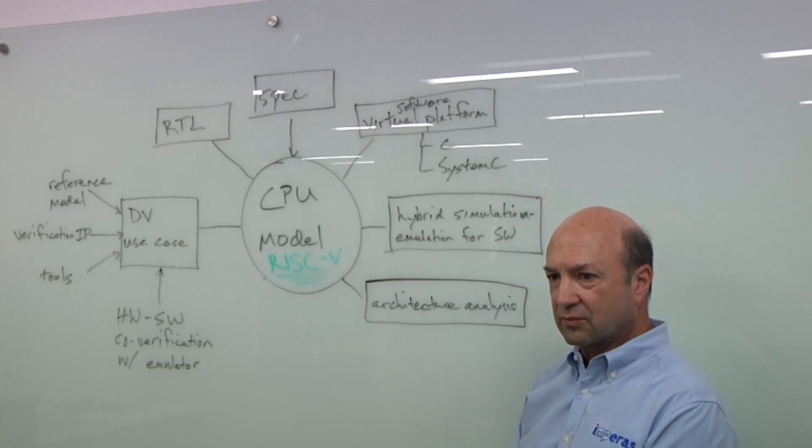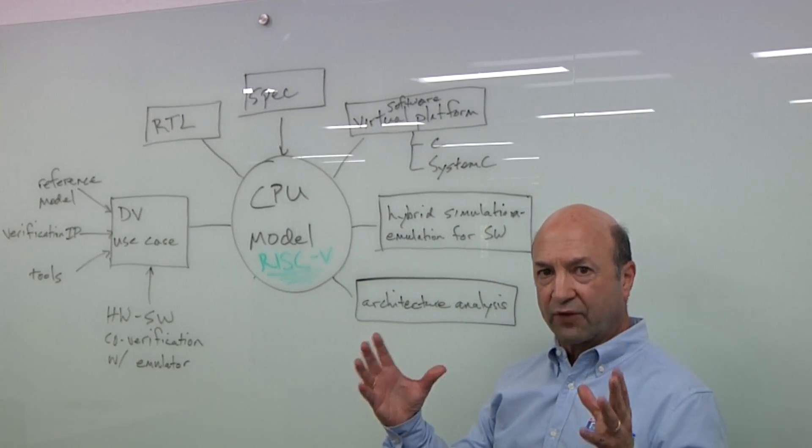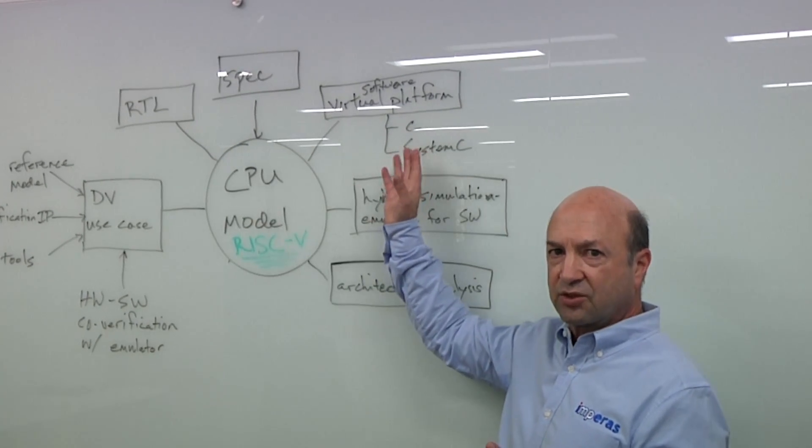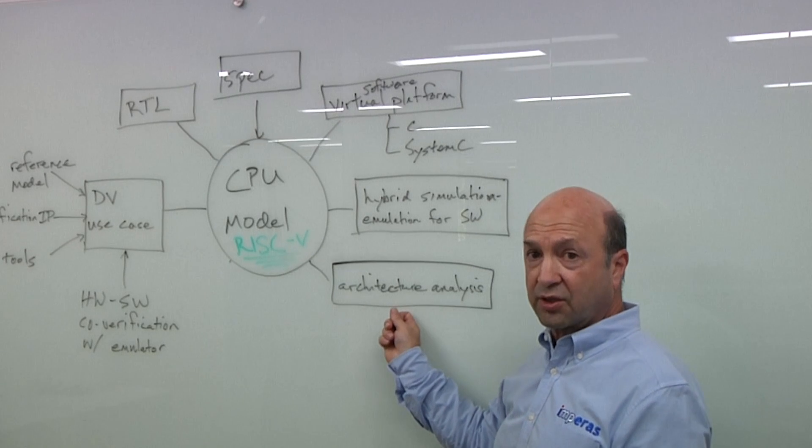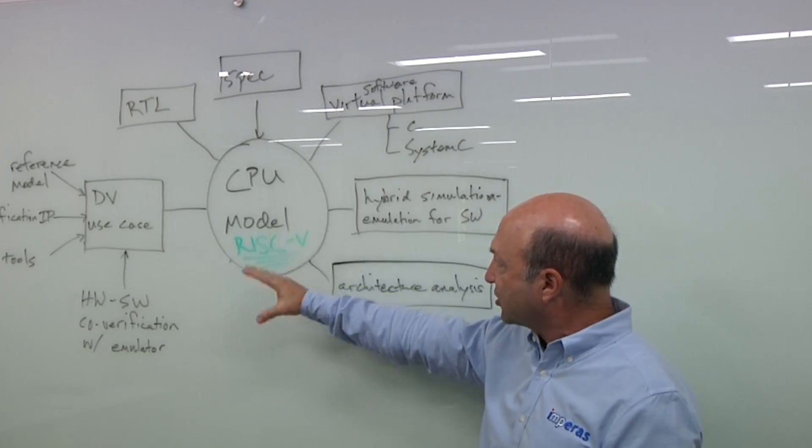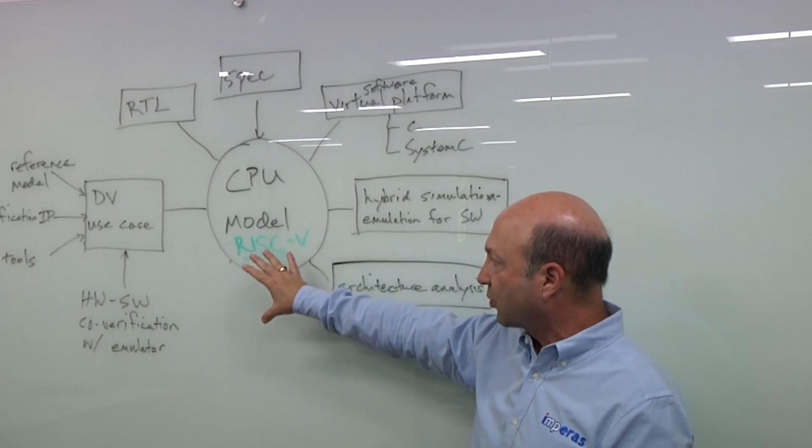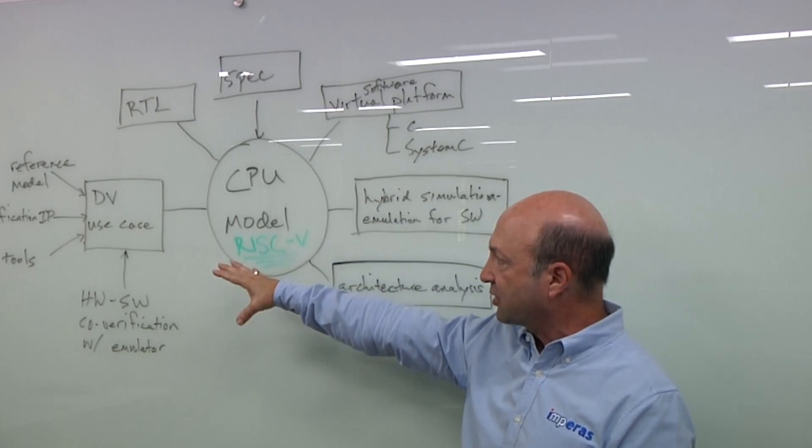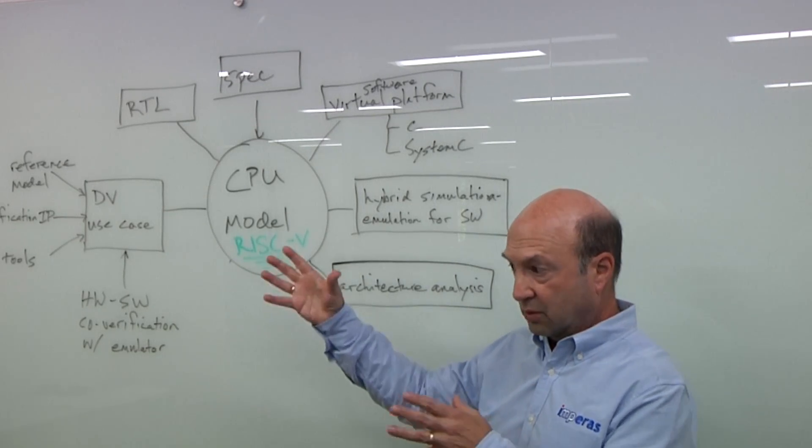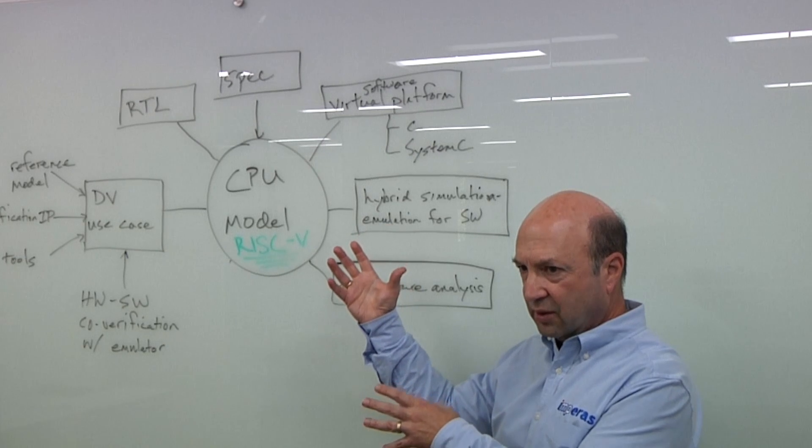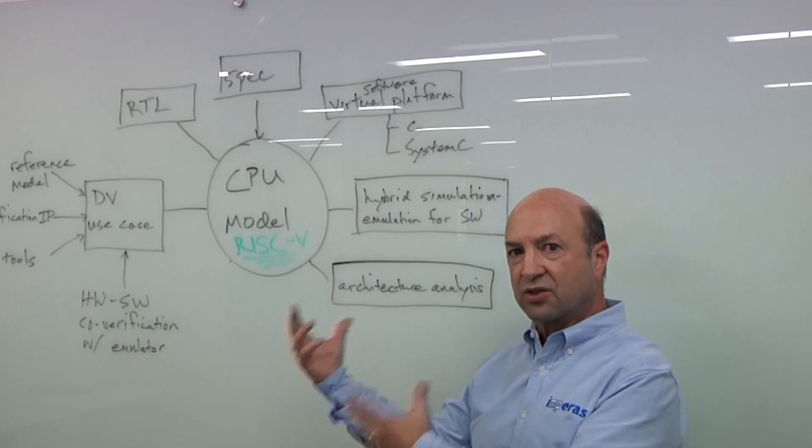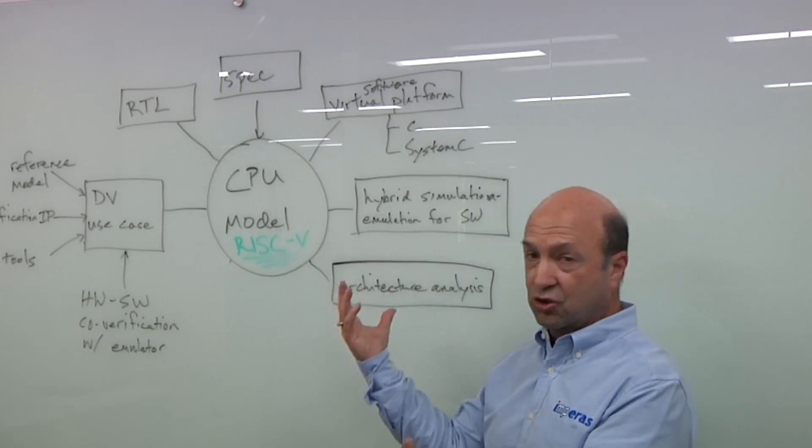So what has to happen on the software side to make that work? The nice thing about the reference model is that it not only gets used for design verification, but it gets used for software development and even for architecture analysis. But let's talk about software development first. The nice thing here about using a reference model for software development as well as for design verification is that now you've got the same basis for doing both the hardware and the software. And from a high level, the benefit of this is going to be that when you get silicon back in the lab and you bring software up, it should just work.